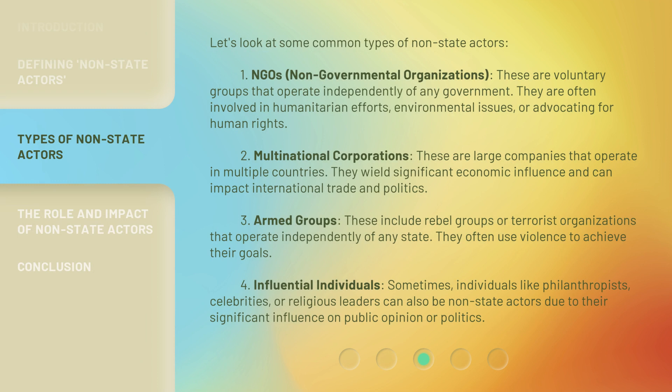Let's look at some common types of non-state actors. First, NGOs — Non-Governmental Organizations. These are voluntary groups that operate independently of any government. They are often involved in humanitarian efforts, environmental issues, or advocating for human rights.